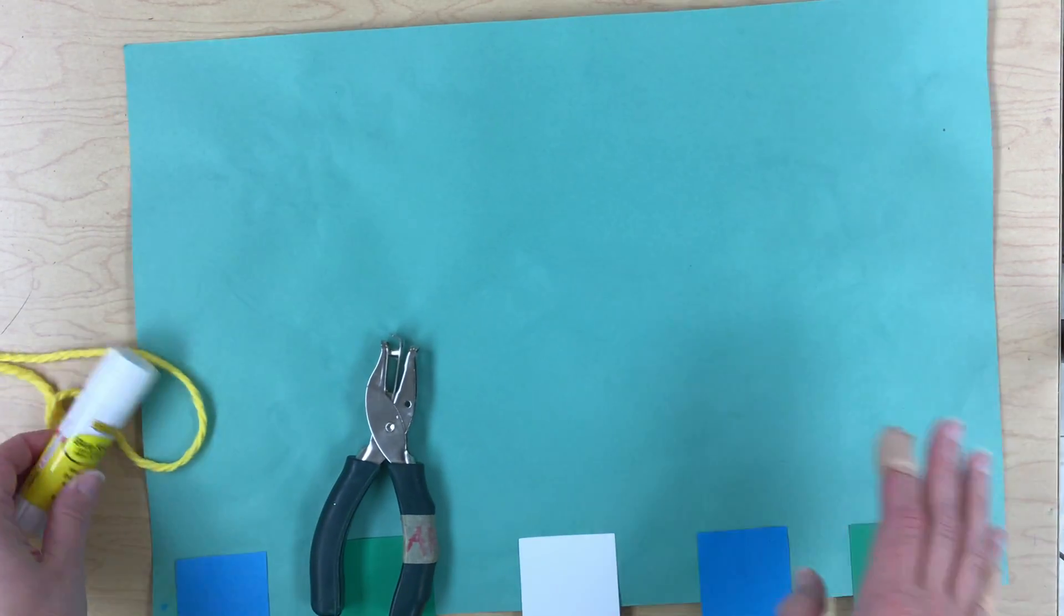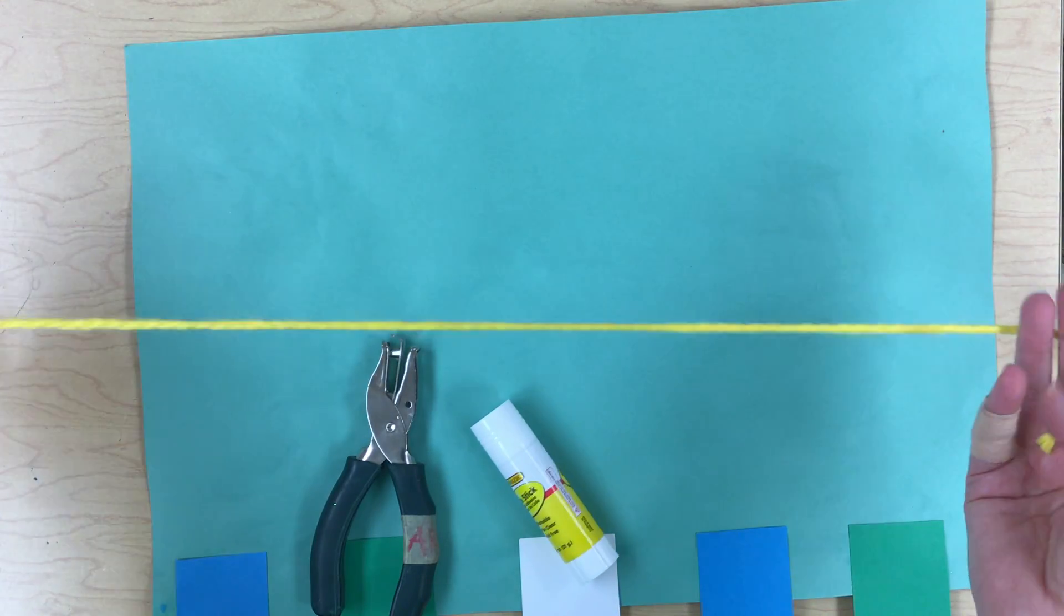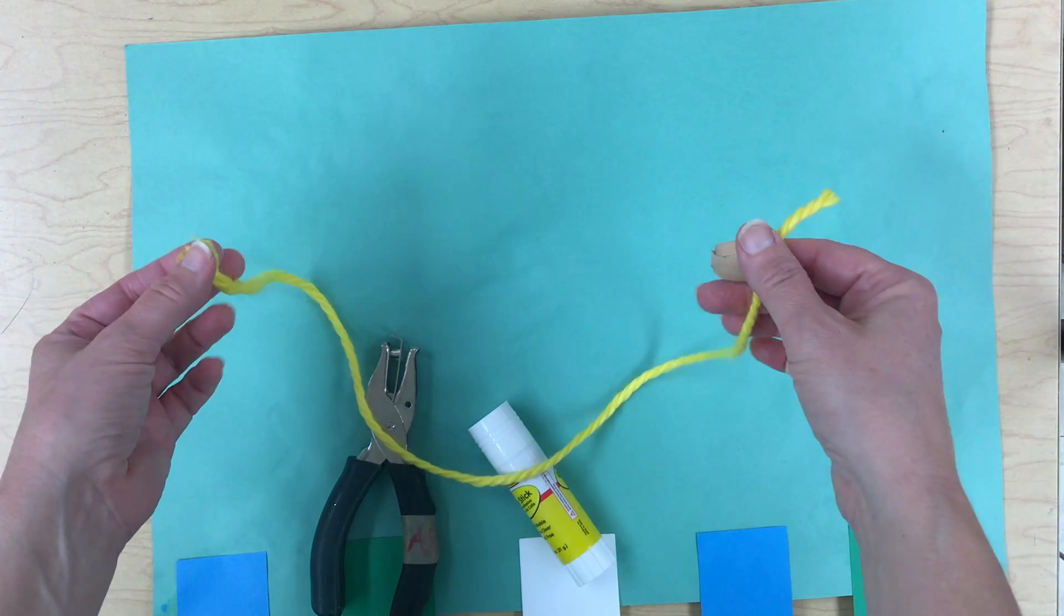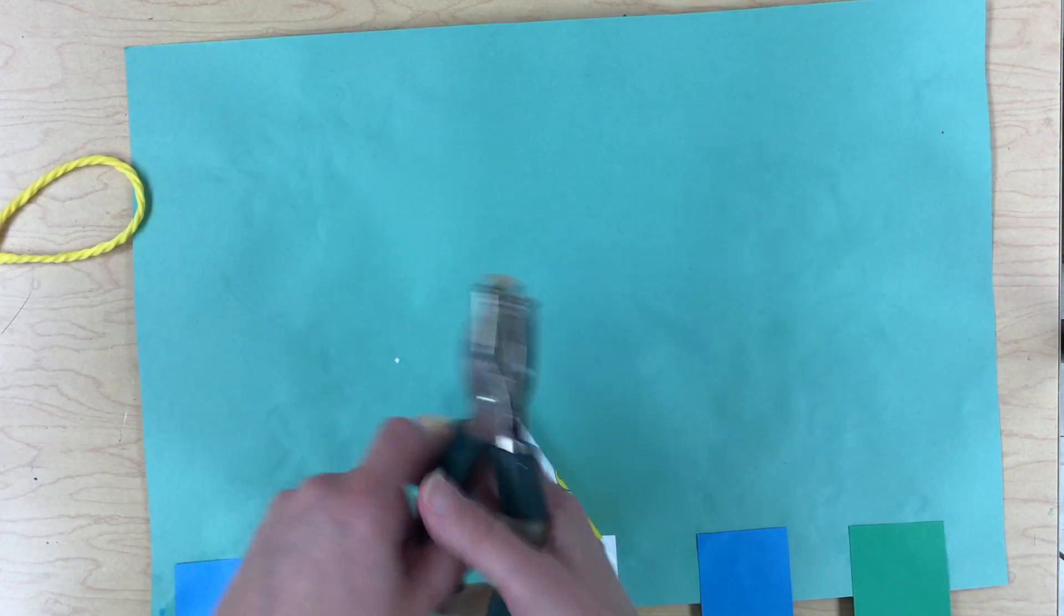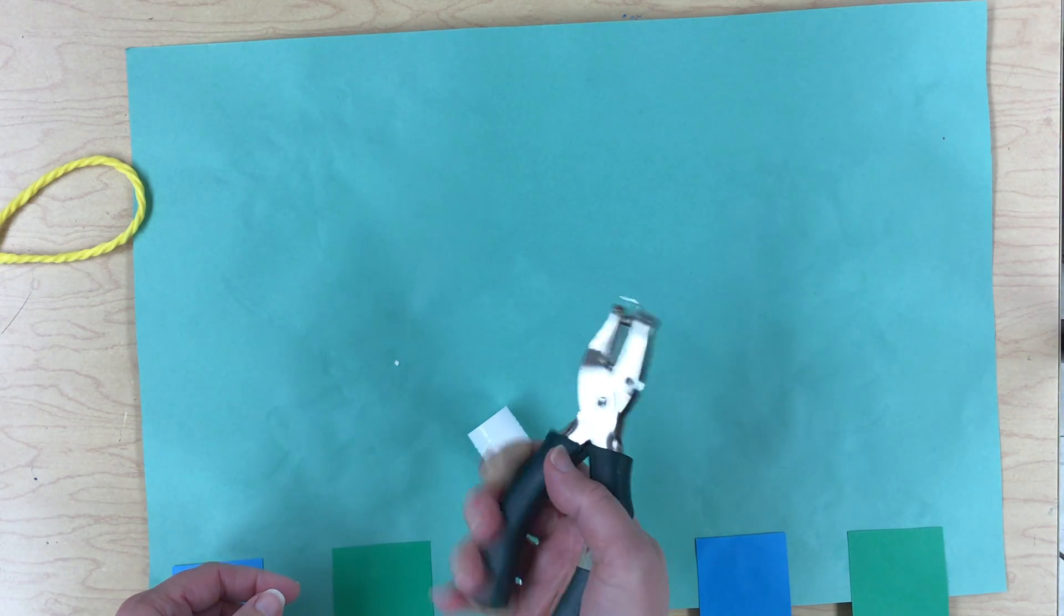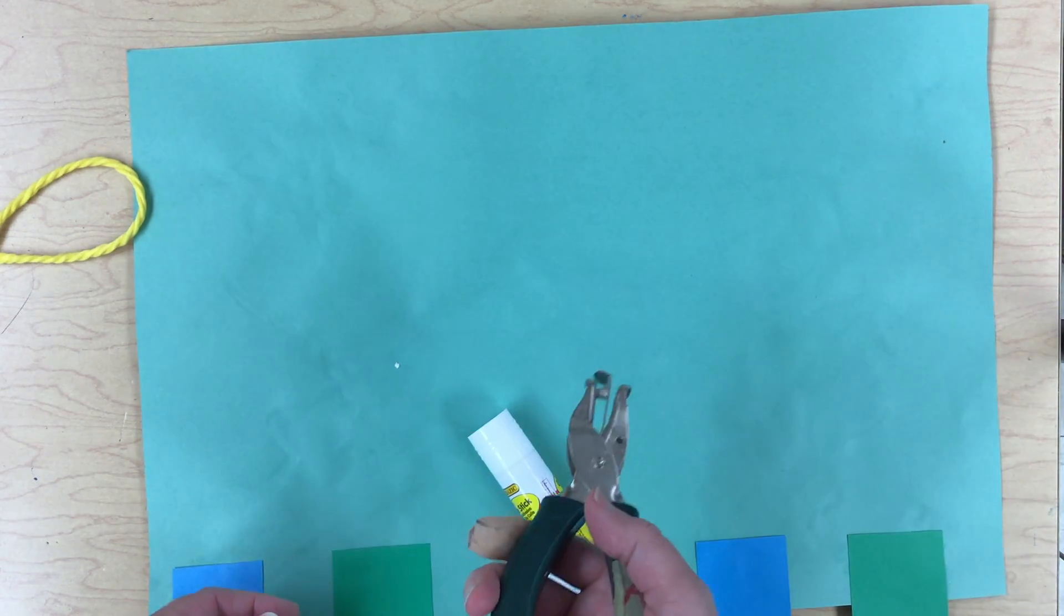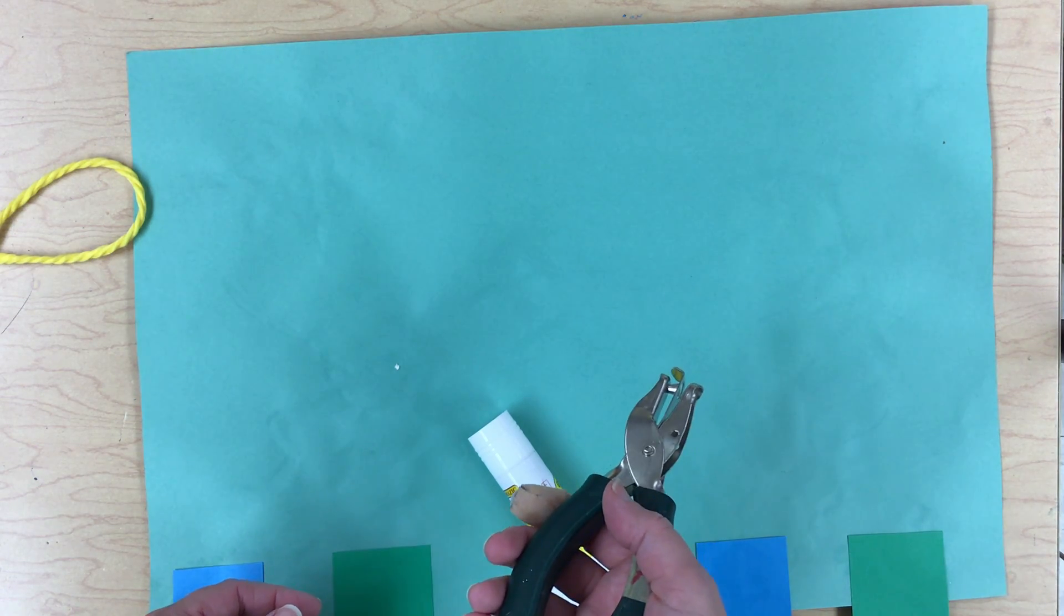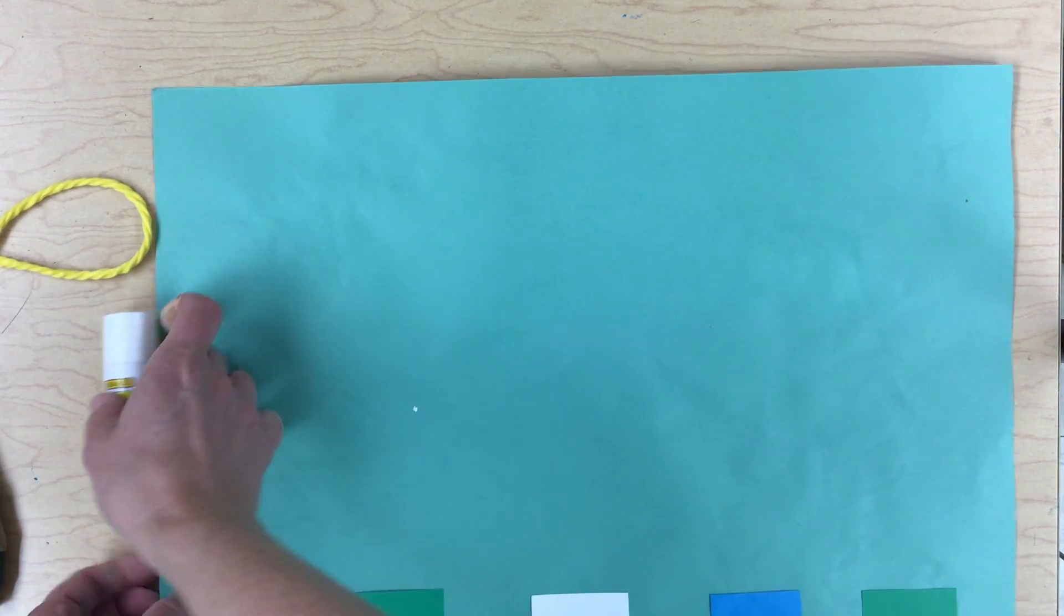I have here my glue stick, a piece of yarn that is about a foot and a half long to hang my windsock, and a hole puncher, which is going to be really helpful. You don't want to use a pair of scissors and just jab a hole through this. Try to find something that will gently put a hole. If you have a hole puncher, it makes it a lot easier.